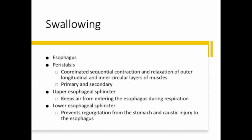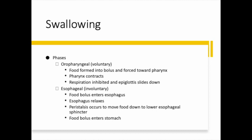At each end of the esophagus there is a sphincter that should open and close appropriately at the right time. The upper esophageal sphincter prevents air from entering the esophagus during respiration. The lower esophageal sphincter — sometimes called the cardiac sphincter — prevents regurgitation of food back from the stomach. If food moves back up, it brings gastric acids with it, which can be very caustic to the esophagus. Swallowing is coordinated primarily by the swallowing center — the medulla. The voluntary or oropharyngeal phase takes place in less than one second.